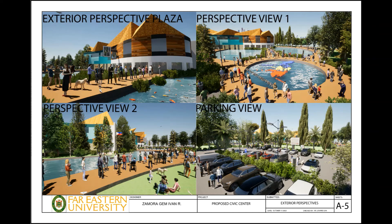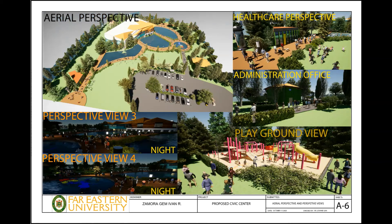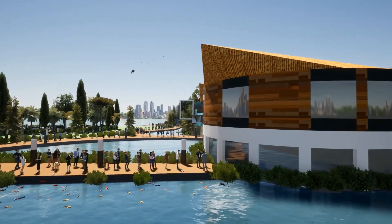Finally, the exterior perspective and aerial perspective. In the drawings you can see the main building exterior perspective, perspective view one, perspective view two, and the parking view. In the aerial perspective, you can see the whole site. There is also the healthcare perspective, administration view, playground view, perspective view three, perspective view four during night. At the end, I present my video walkthrough of the civic center.